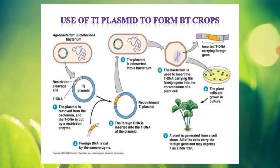The plant cells are grown in culture. You can see in the seventh step — a plant is generated from a cell clone, and all the cells of that plant carry the cry gene. This is the process and the way we produce Bt crops — a very good and very efficient process.